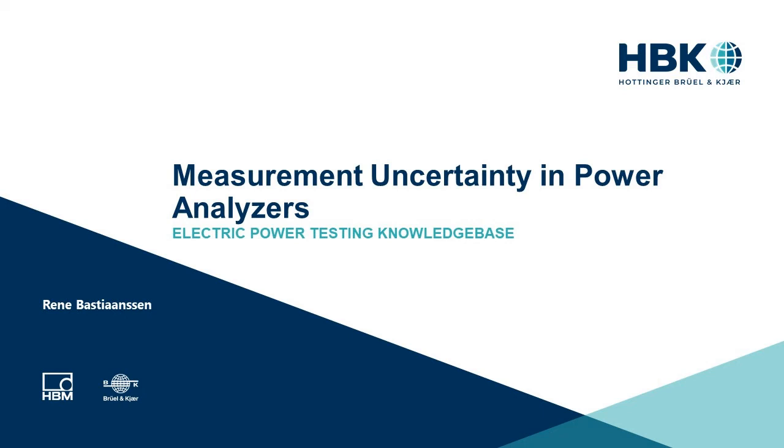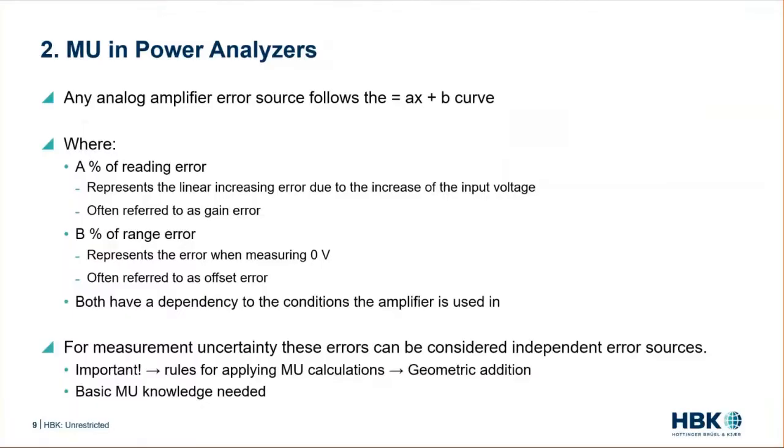Let's look into measurement uncertainty in power analyzers. Where does it come from? If we look at our power analyzer, like any other data acquisition device, it contains analog amplifiers. Any analog amplifier follows an ax + b curve.